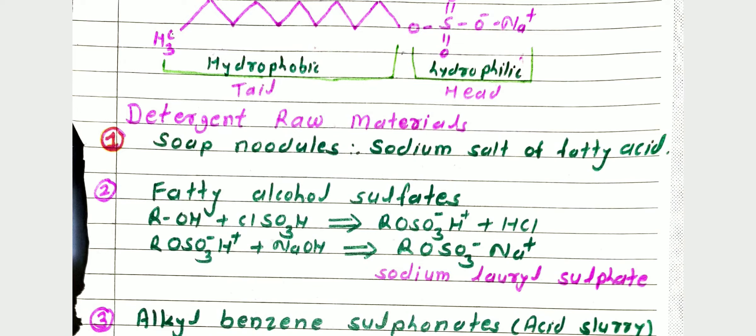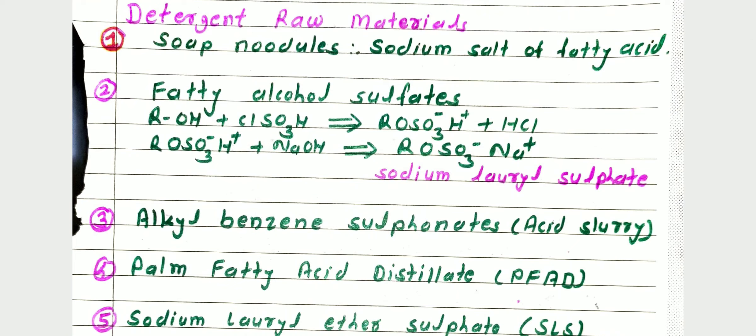The third raw material used for manufacture of detergent is alkyl benzene sulfonates, also called acid slurry. They are the most used raw material, prepared by sulfonating alkyl benzene followed by neutralization with NaOH or caustic soda.